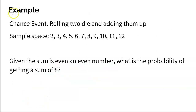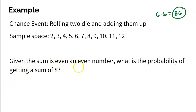Remember when we had this example with rolling two dice? When you roll two dice and add them together, you can get a sum of 2, 3, 4, 5, 6, 7, 8, 9, 10, 11, or 12. And when you roll two dice, there are 36 total outcomes — six for the first die and six for the second. So we say: given the sum is an even number, what is the probability of getting a sum of eight?